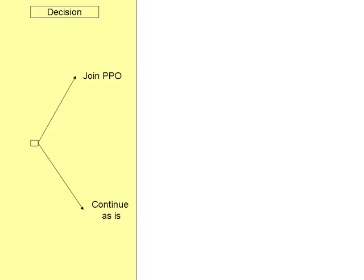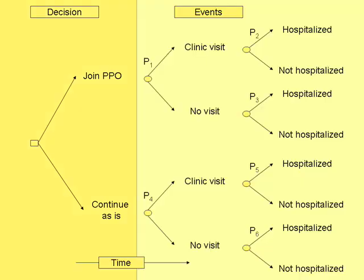First, we display the decision: to join the PPO or to continue as is. Next, we display the events that may follow. The employee might have a clinic visit or might have a hospitalization. Here we show with the probability of P1 that after joining the PPO there will be a clinic visit, and with the probability of P2 that after joining the PPO there will be a hospitalization. The events are shown both under the alternative option as well as under continuing as is.